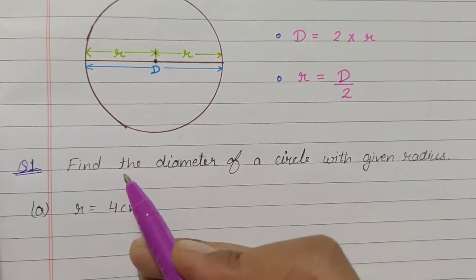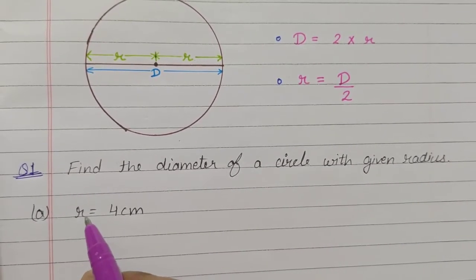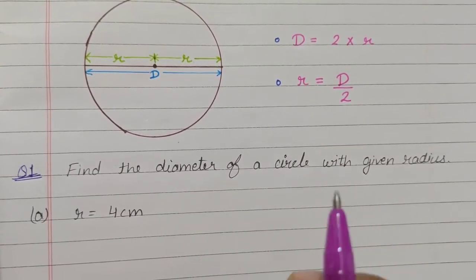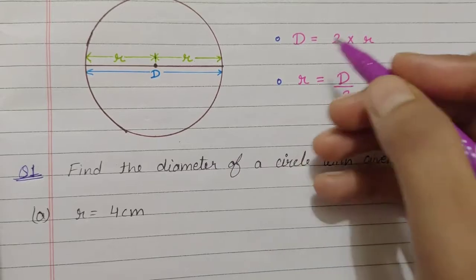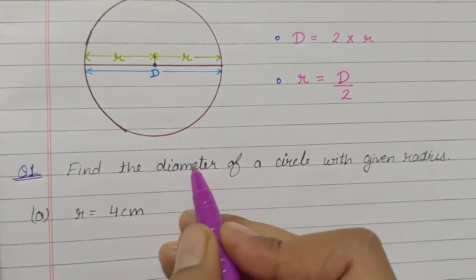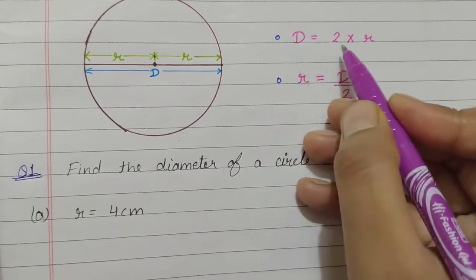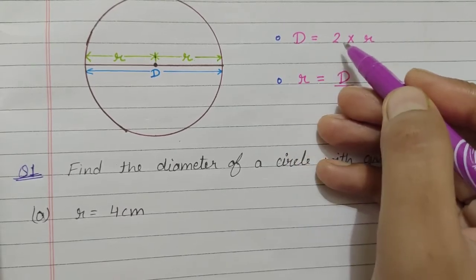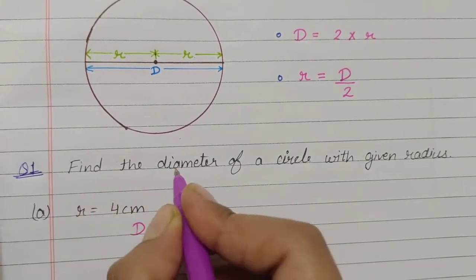Here is question number one: find the diameter of a circle with a given radius. The value of radius will be given to you and you have to find the value of diameter. First of all, write the formula. We have to find the diameter, so we use the first formula where diameter is equal to two multiplied by radius.